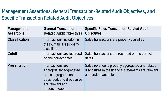The remaining three assertions cover classification — transactions included in journals are properly classified; cutoff — transactions are recorded on the correct dates; and presentation — transactions are appropriately aggregated or disaggregated and described, and disclosures are relevant and understandable. Their specific sales objectives mention sales transactions by name in each case.